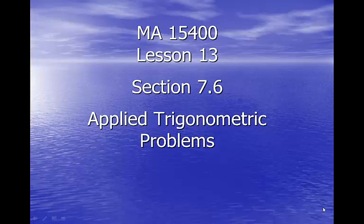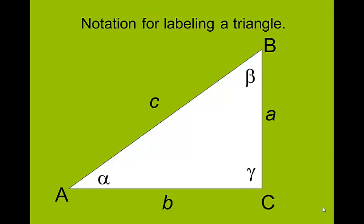All right, lesson 13, section 7.6, Applied Trigonometric Problems — this is our second day in section 7.6. We'll have lesson 14 to wrap up this section. This is how we label a triangle: alpha is across from little a, beta is across from little b, gamma is across from little c. That's how we always label our triangles — nothing new, we talked about that in the last lesson.